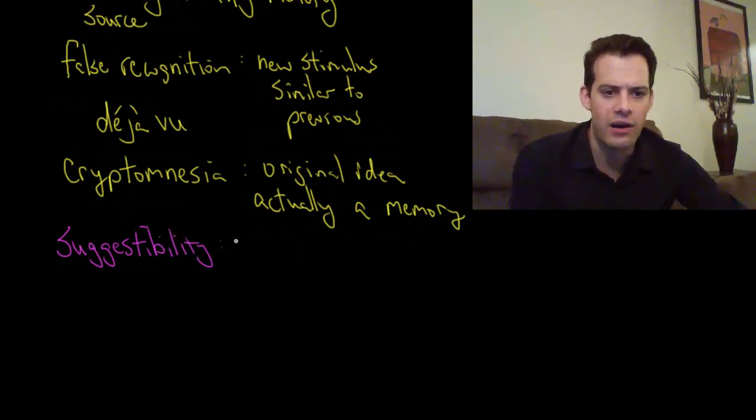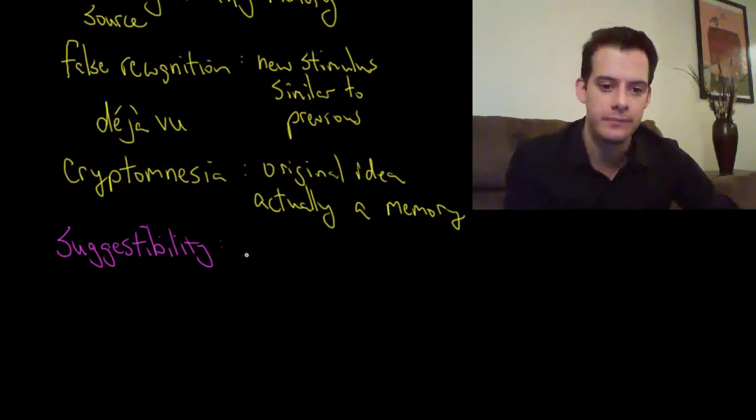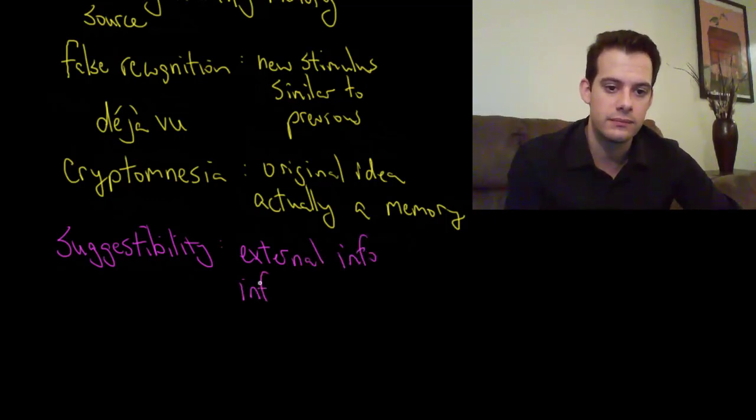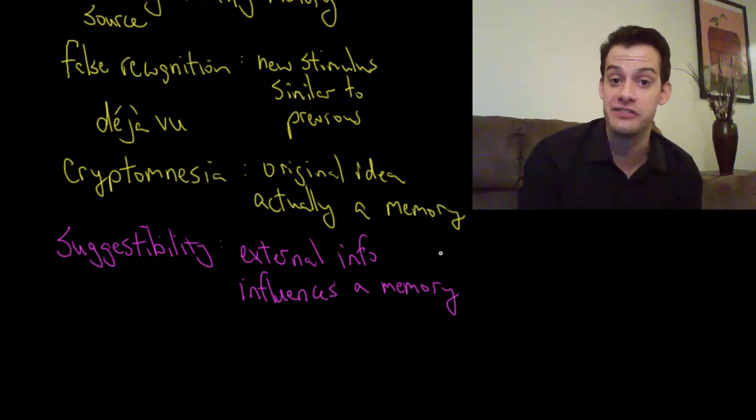And this relates to the idea that our memories are malleable. I mean that external information that's not part of a memory can actually change that memory. So our memory is being influenced, external info influences a memory. It's being influenced by these other events that weren't part of the memory but they can cause the memory to change.